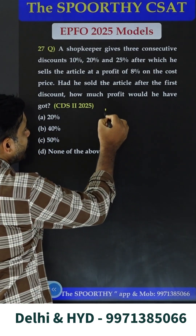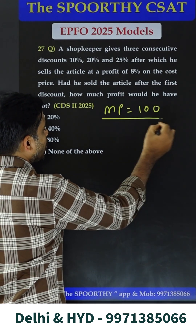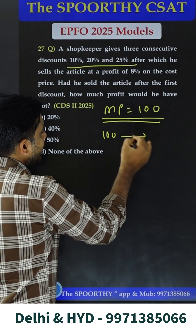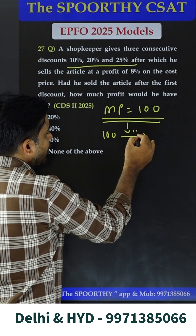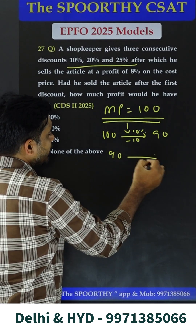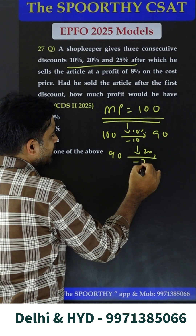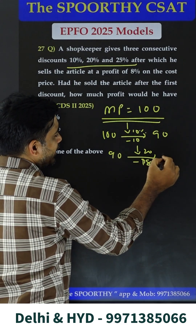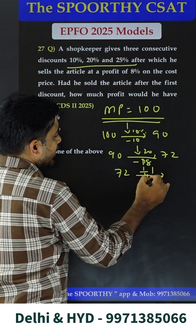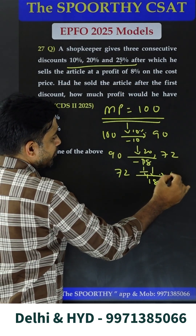First, let us take market price equal to 100. On MRP, you will give the discount. On 100, a 10% discount makes it 90. On 90, a 20% discount means 20% of 90 is 18, reduced to 72. On 72, a one-fourth reduction means 18 is reduced, giving 54.